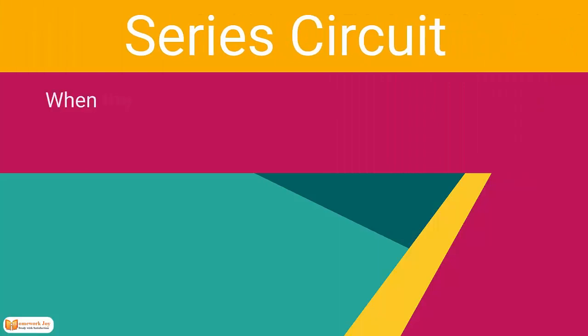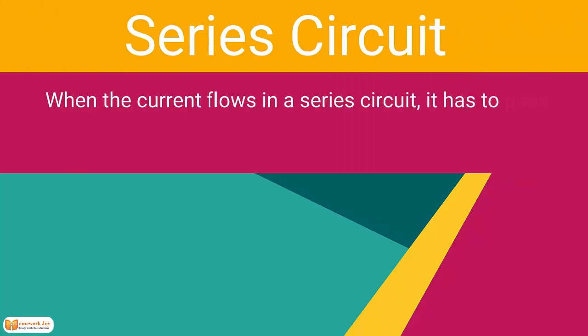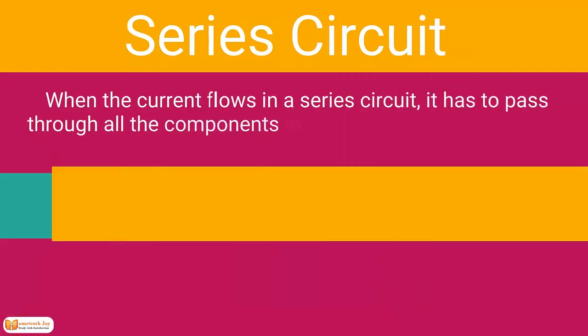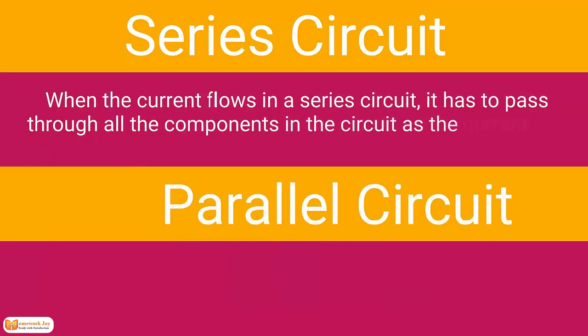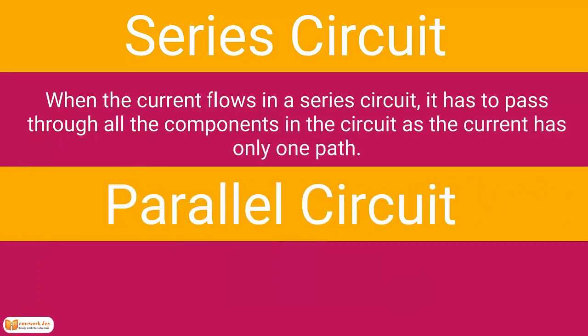Series circuit. When the current flows in a series circuit, it has to pass through all the components in the circuit, as the current has only one path.